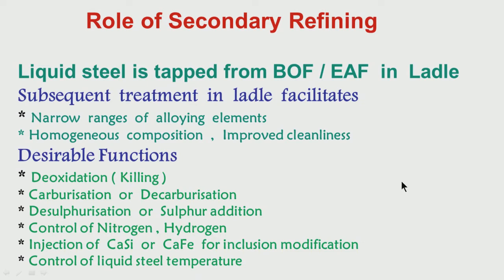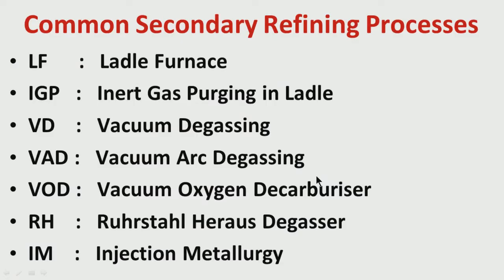I had also talked about the different processes like ladle furnace, inert gas purging, and vacuum degassing — how these help in achieving the different requirements for quality enhancement. I have not yet talked about decarburization as one important requirement for secondary refining.